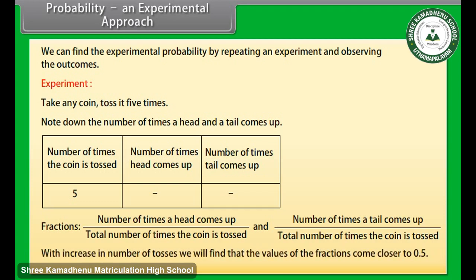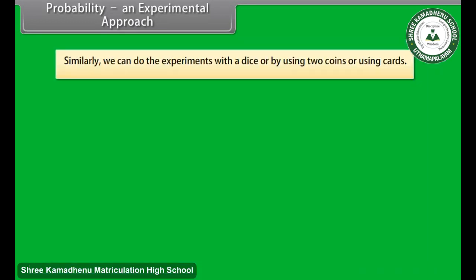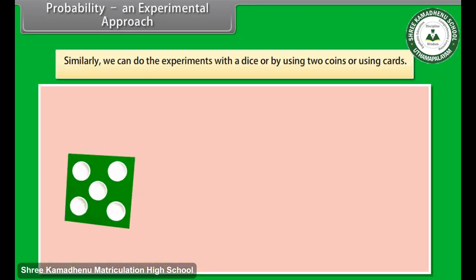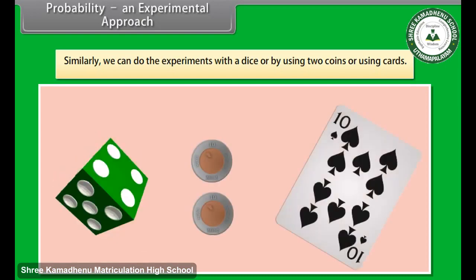As we increase the number of tosses, we will find that the values of the fractions come closer to 0.5. Similarly, we can do the experiments with a dice or by using two coins or using cards.